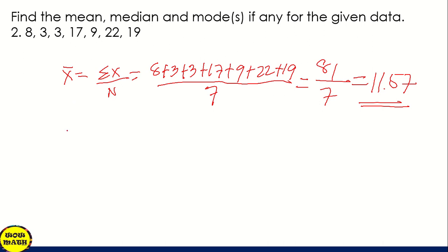Next is the median. So same process. We need to arrange first from lowest to highest. We have 3, 3, 8, 9, 17, 19, and 22.